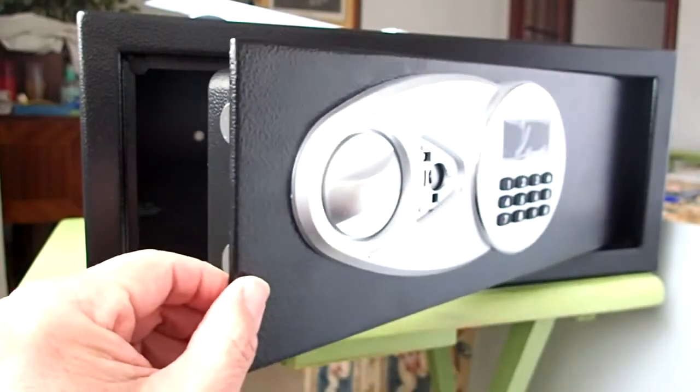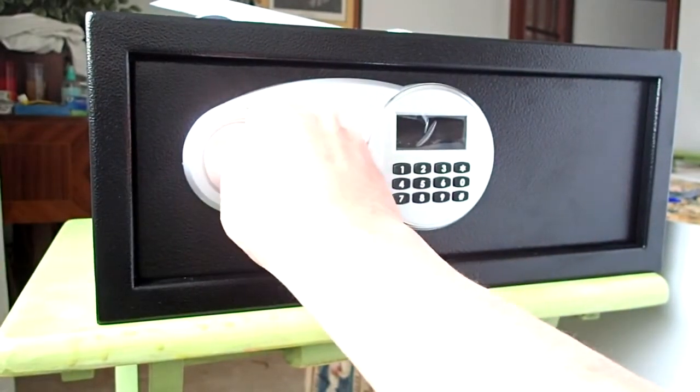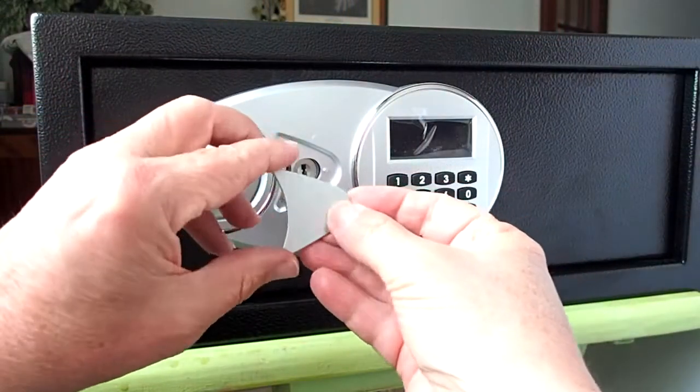To lock the door, turn the knob counter clockwise. Put the emergency lock cover back on.